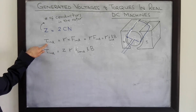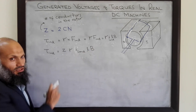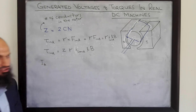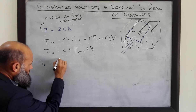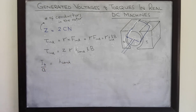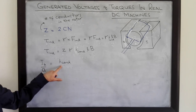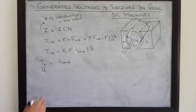The total torque induced in a real DC machine is Z × R × I_conductor × L × B. What is the current in each conductor? If IA is the total armature current, there are A parallel paths in the machine, so the current in each conductor equals IA divided by A. The number of parallel paths depends upon the type of winding — whether lap-wound or wave-wound.